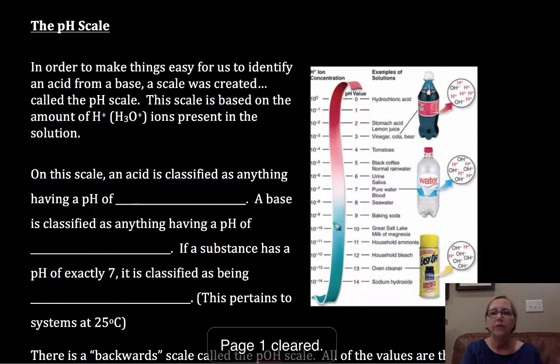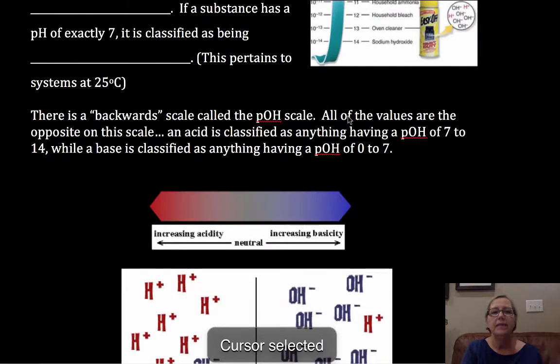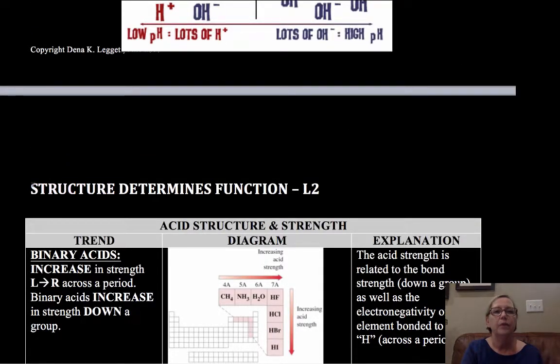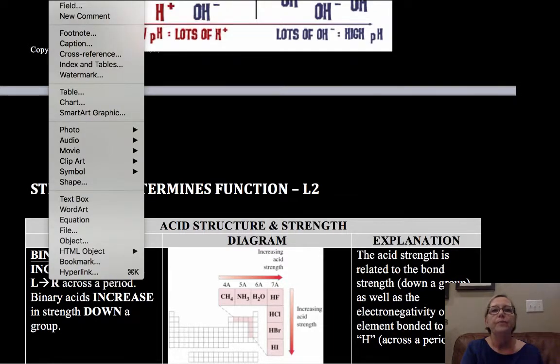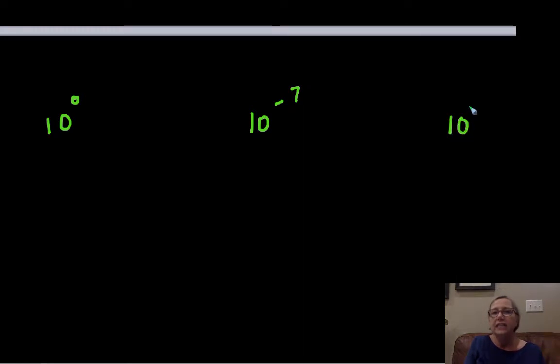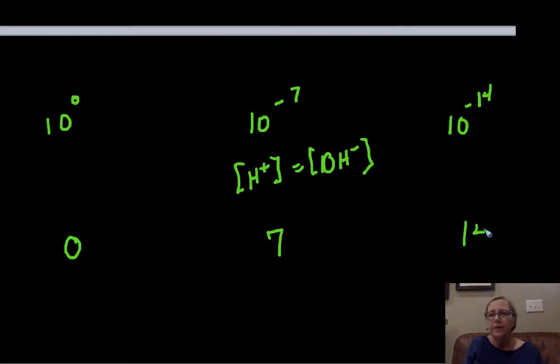I'm going to talk about the pOH scale in just a minute, but let's ferret out a little bit more information on this. So when we have this scale, if you notice what we're doing is we have 10 to the 0, we have 10 to the minus 7, we have 10 to the minus 14. So at this point my H+ is equal to my OH-. Now this is defined as a pH of 0. Notice we don't look at the negative sign. We'll see the algebra of this later on. We're only taking that power, and then we have the 14.